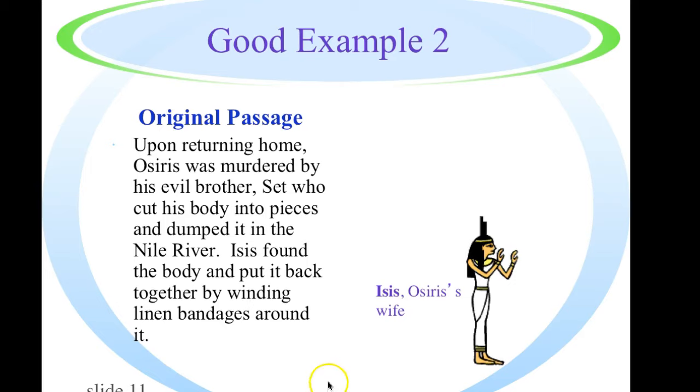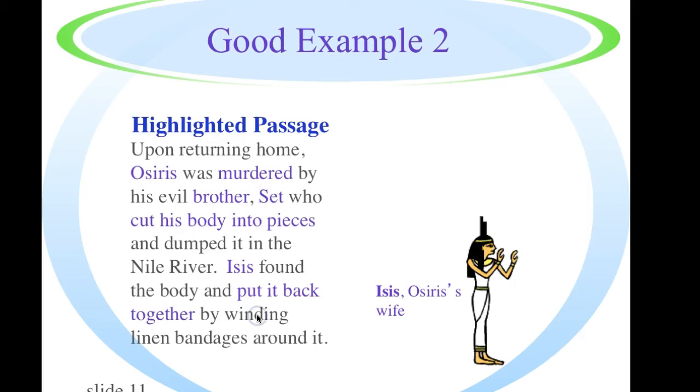In a good example, here's what would be highlighted. Osiris murdered brother Set, cut his body into pieces. Isis put it back together again. I hope you caught one essential word that was not highlighted that would change the entire meaning of this passage. Can you find it? It's this simple word, by. If we look only at our highlighting, it appears that Osiris murdered his brother Set instead of being murdered by his brother Set. So we always have to be careful with our highlighting.